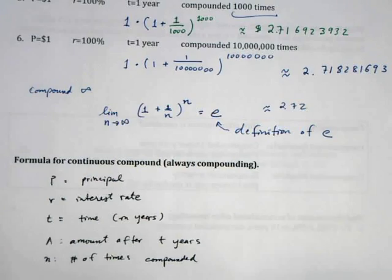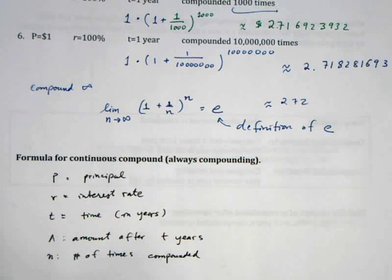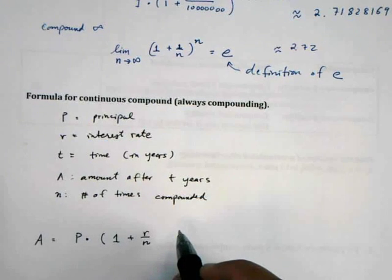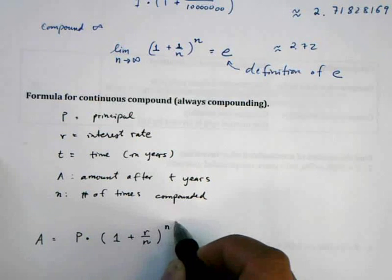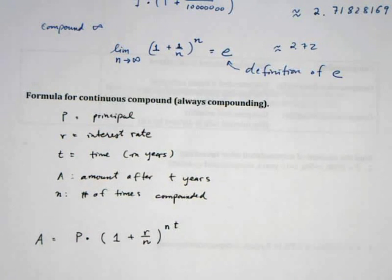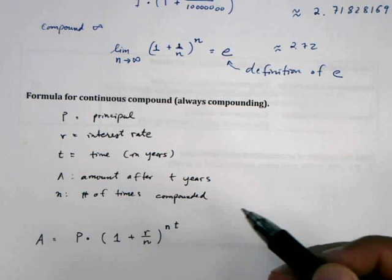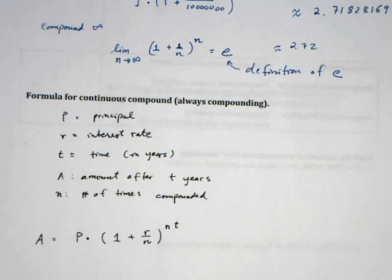Building off of what we already have going on up here, we know that the amount is equal to the principal times one plus the rate divided by the number of times it's compounded, raised to the NT. This is the number of years and this is the number of times you're compounding every single year.